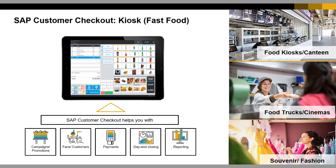The second user interface mode is the kiosk mode, suited for food kiosks, canteens, food trucks, cinemas, and souvenir shops. The technological basis is the same as the retail mode — it supports out-of-the-box integration to SAP Business One and is also offline capable. However, the user interface is optimized for the kiosk industry so you can execute your sales process very fast. Standard functionality like time recording and day-end closing is also supported in the kiosk mode.